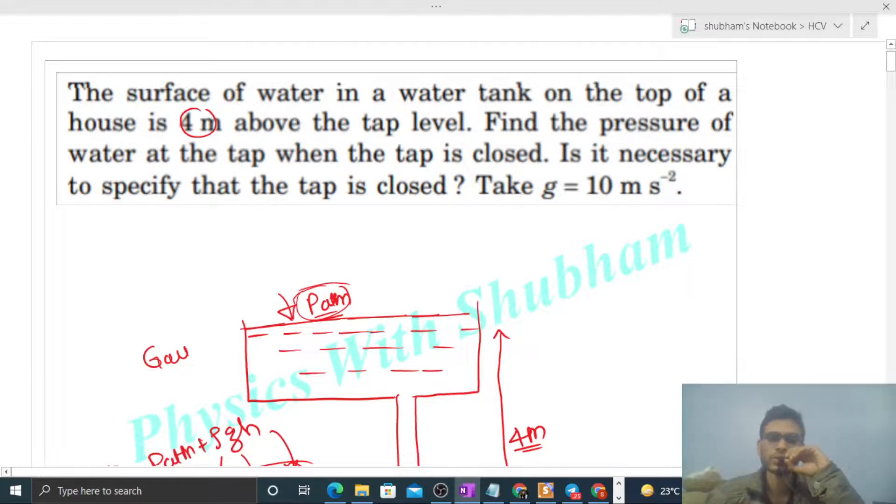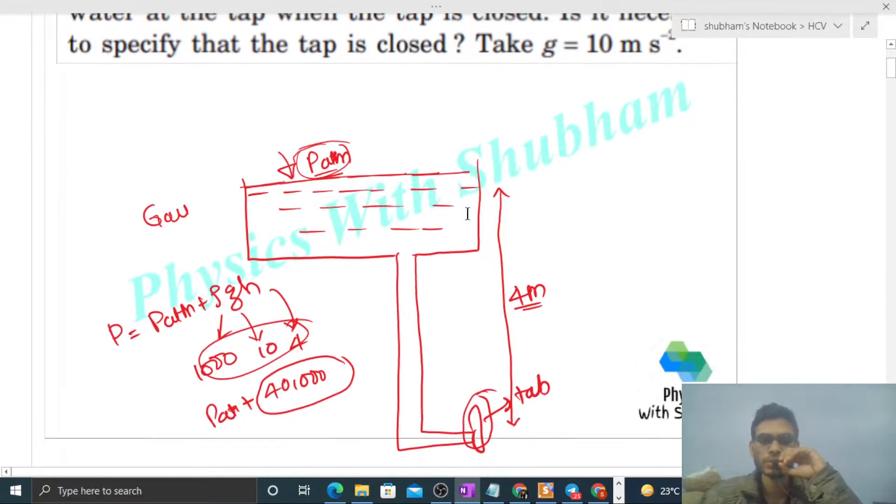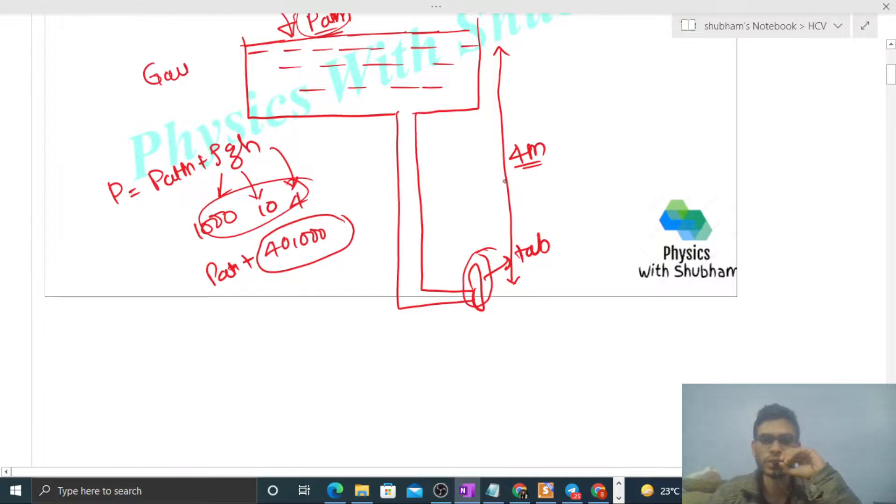Anyway, is it necessary to specify that the tap is closed? Of course it is necessary to specify that the tap is closed. If the tap is open, then the water will flow, then you can use Bernoulli's equation and find out the pressure at the tap level.